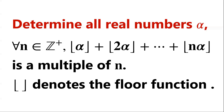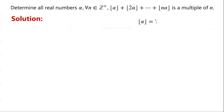Determine all real numbers α such that for every positive integer n, the integer floor(α) + floor(2α) + ... + floor(nα) is a multiple of n. Note that the floor of α is the greatest integer less than or equal to α.